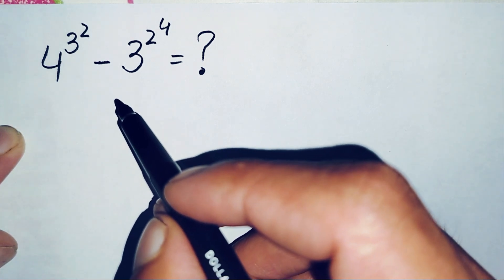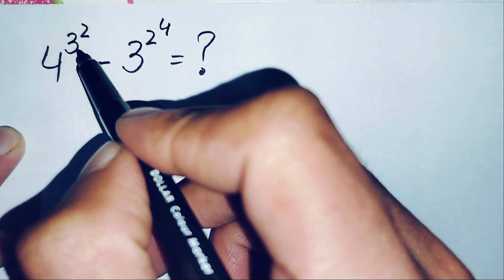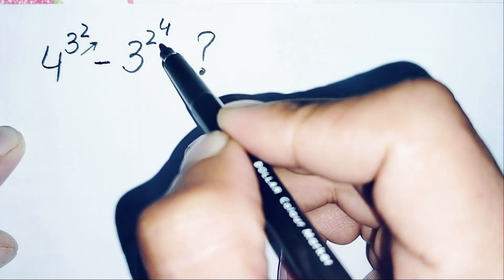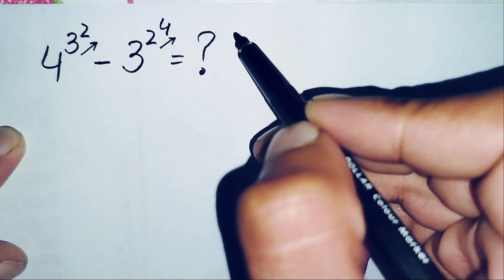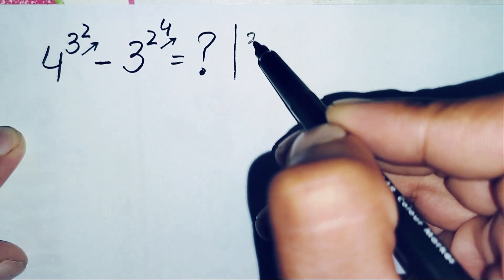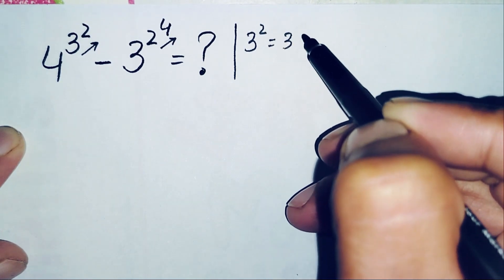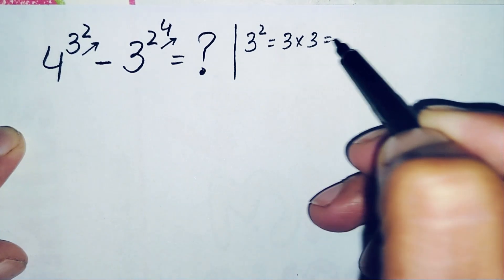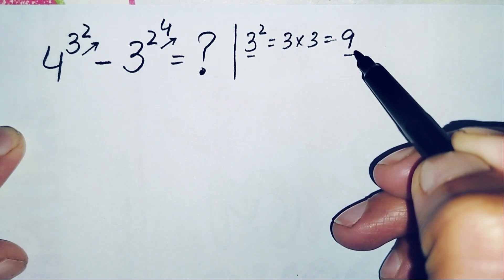First of all, in this problem we will try to solve the powers in both terms: 3 raised to power 2 and 2 raised to power 4. So what is the value of 3 raised to power 2? It means we need to multiply 3 two times, so 3 times 3 is 9. Therefore 3 raised to power 2 is 9.